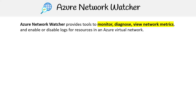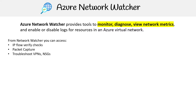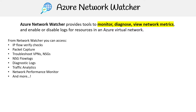Taking a quick look here at Azure Network Watcher, which provides tools to monitor, diagnose, and view network metrics, and also enables or disables logs for resources in your Azure virtual network. There are a few things you can access from this service like IP flow verify checks, packet capture, troubleshooting VPNs and NSGs, NSG flow logs, diagnostic logs, traffic analytics, network performance monitor, and a bunch of other stuff.